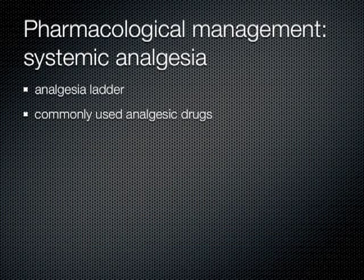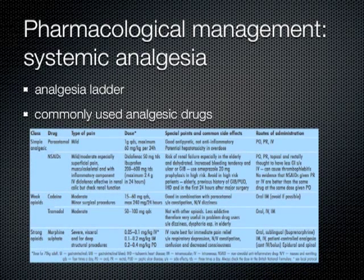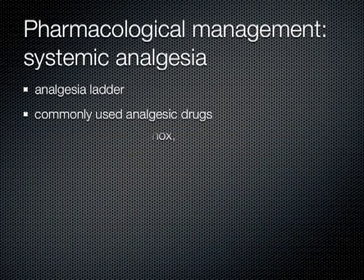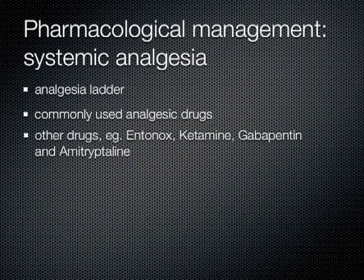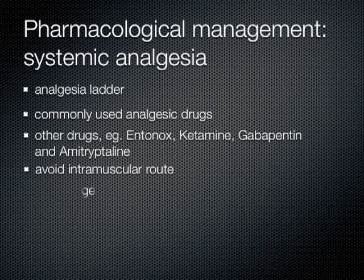Here is a chart with many of the commonly used analgesic drugs and some details about each. Some additional adjuvants like Entonox, ketamine, gabapentin, and amitriptyline are frequently used as well. With systemic analgesia, it is ideal to avoid the intramuscular route if at all possible, as it is painful to the patient and absorption of the drug can vary. In other words, oral analgesia is advocated.